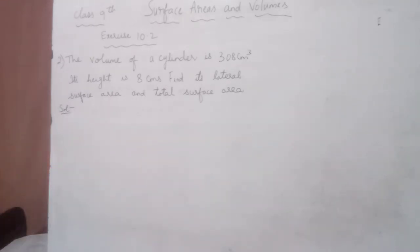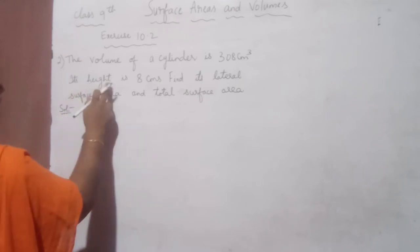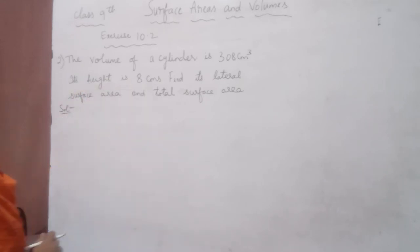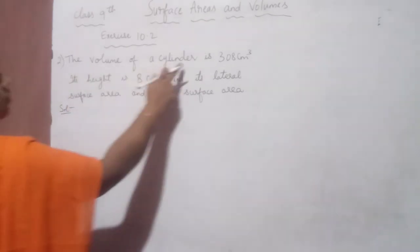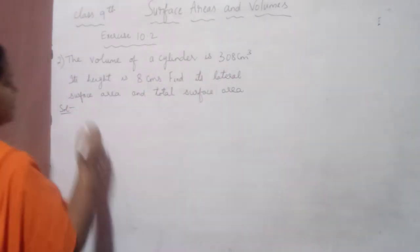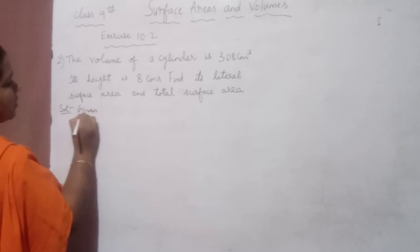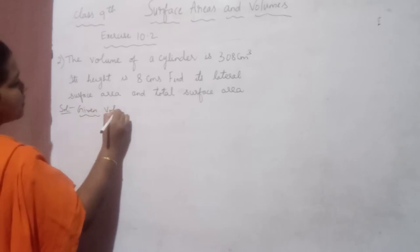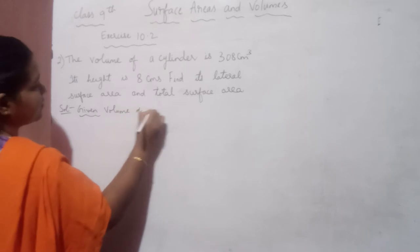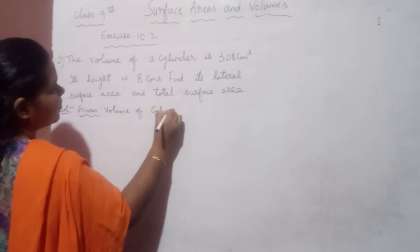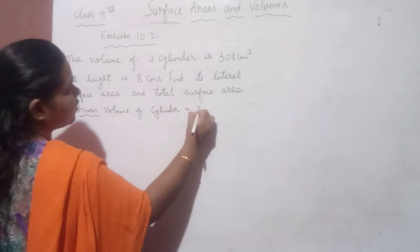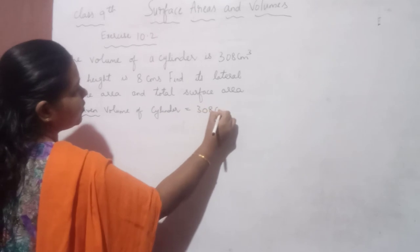We know the formulas for lateral surface area and total surface area. We need the values of H and R to find them. H is the height, which is given. We don't know the radius. So from the volume of the cylinder, we have to find the radius. Given: volume of cylinder is equal to 308 cm³.